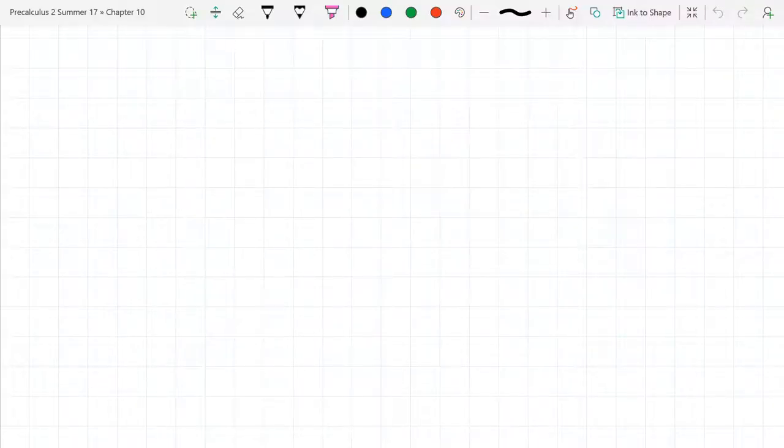We're gonna graph tangent and cotangent now. We're gonna graph tangent first, and we don't know what it looks like. It's gonna look different than the other four graphs that we just got through.